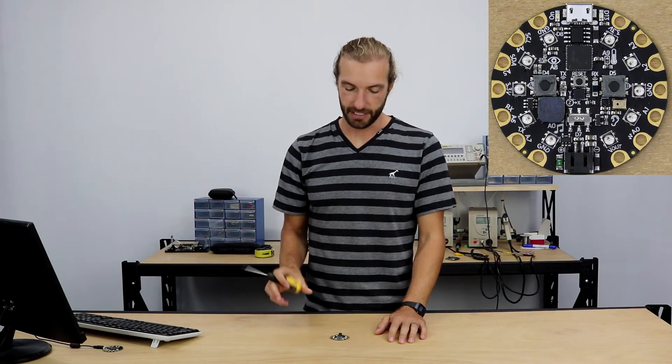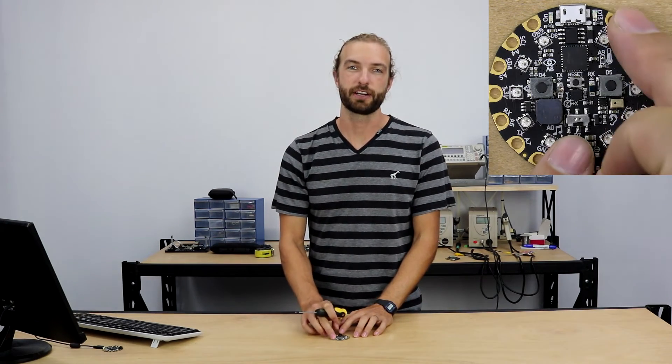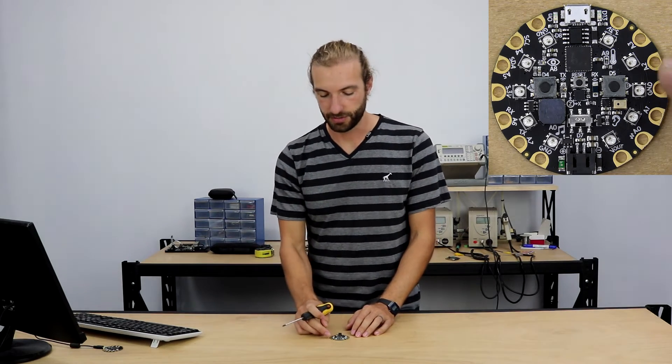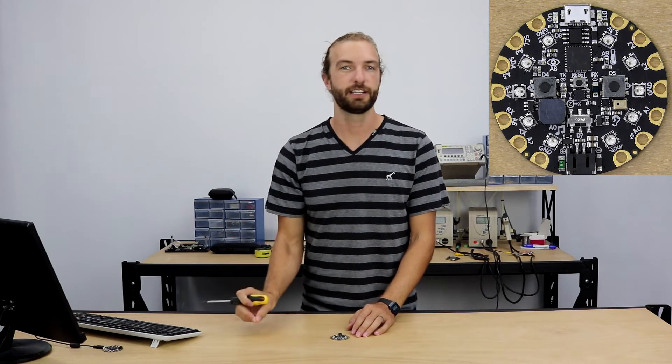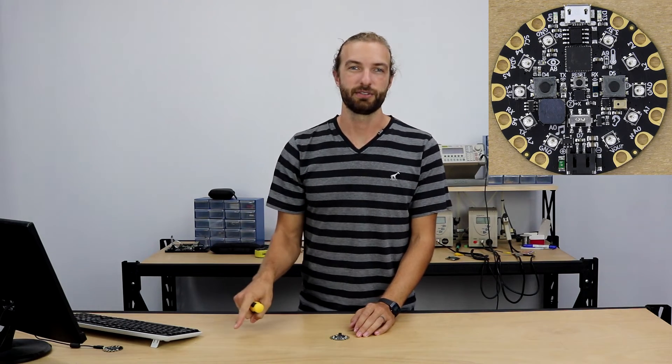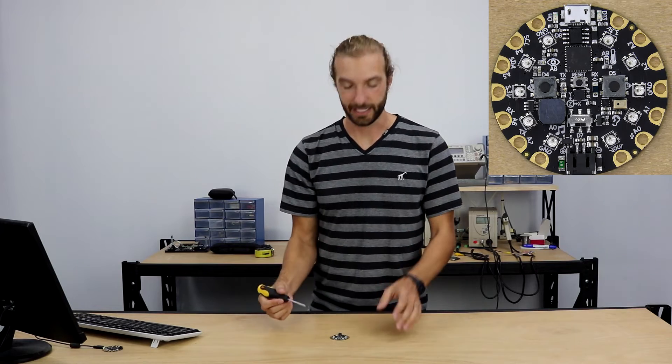The pins on the outside are capacitive touch sensitive, so they can detect just being touched with your finger rather than connecting a switch to them. You could take an alligator clip wire and stick it into a lime or a piece of fruit, and it would be able to detect when you touch the piece of fruit. You could write a program to react to that.